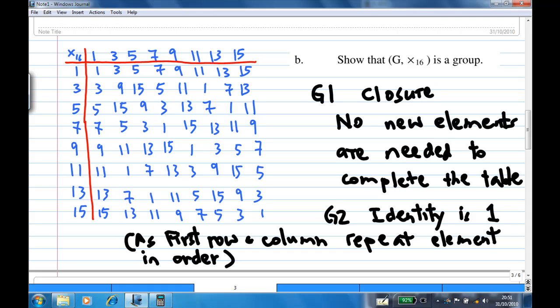Second, the identity element is 1 because the first row and column repeat the element in order.